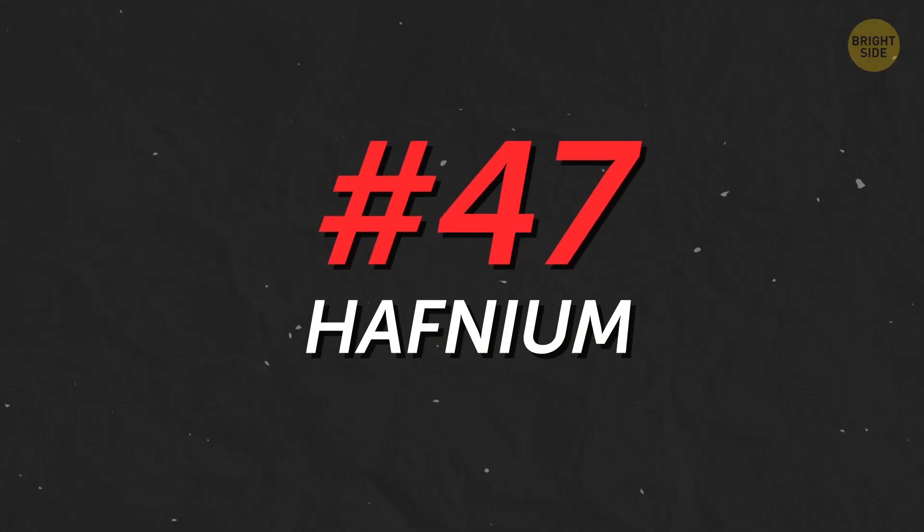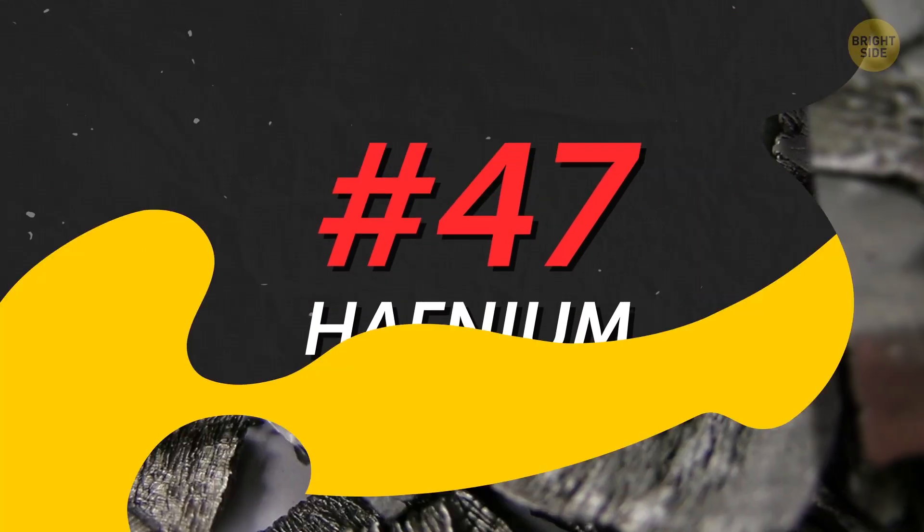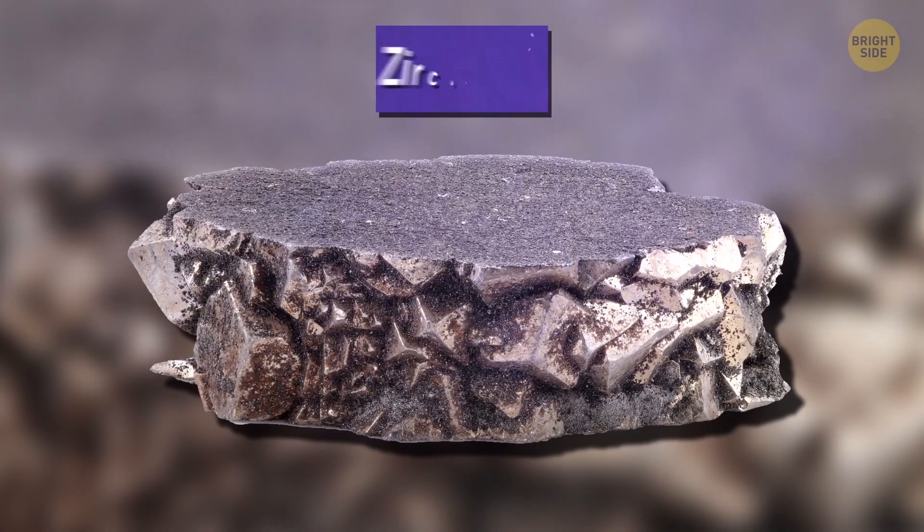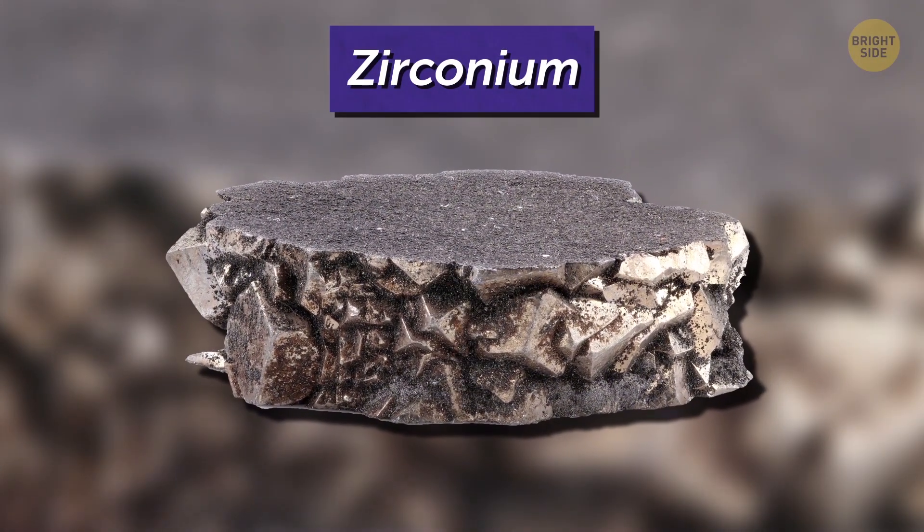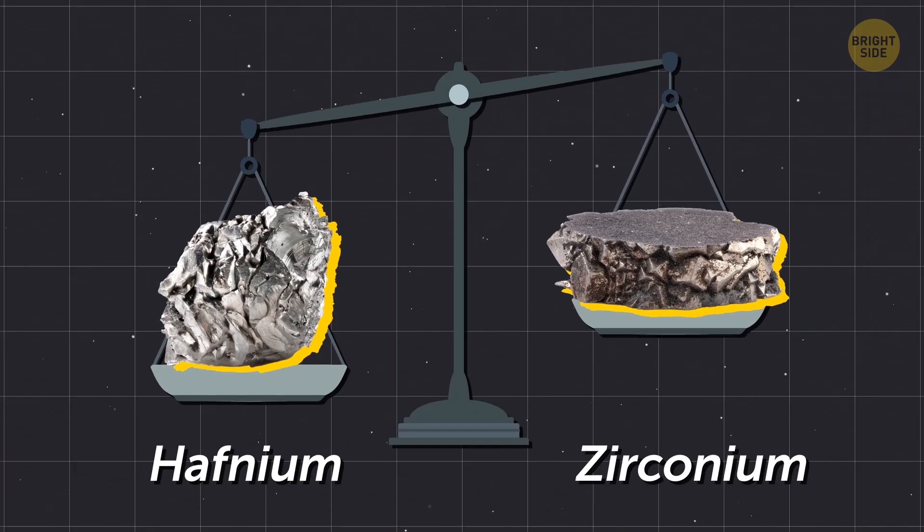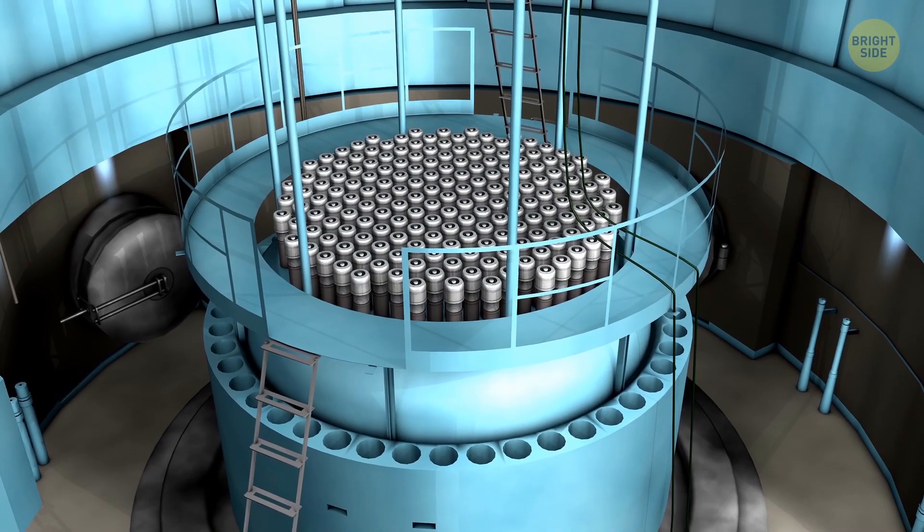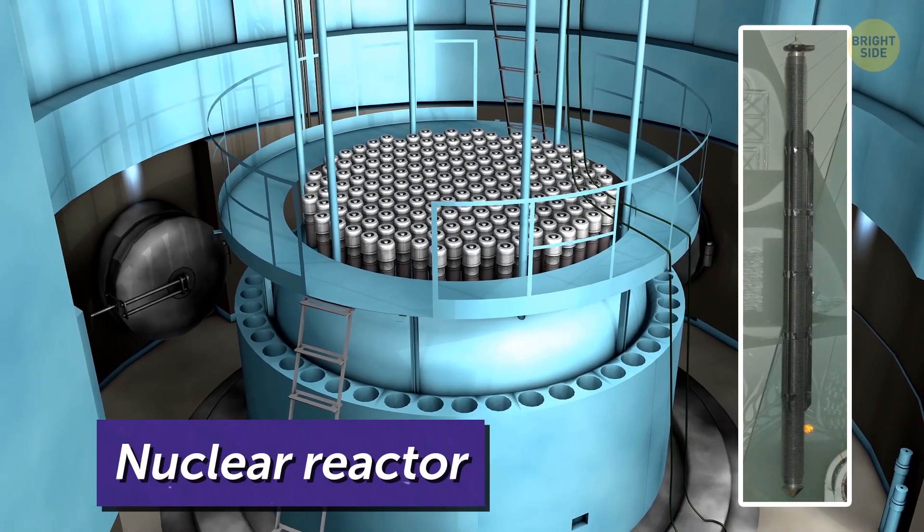At number 47 we have hafnium. This little element is never alone. It's always found as a solid object with another compound called zirconium. But hafnium is twice as dense as its companion. Once the two separate, it can be used as a nuclear reactor control rod.